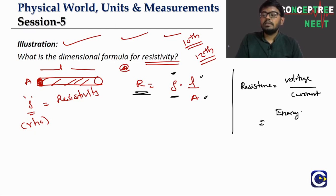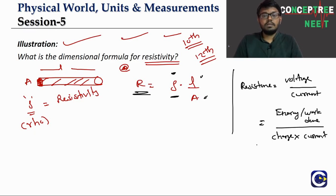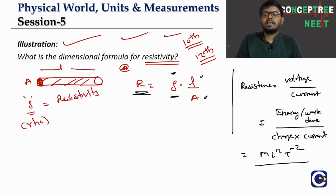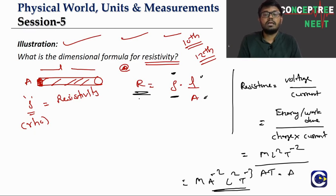Energy or work done has dimensional formula M L² T⁻². Charge is current × time = A × T. So voltage = M L² T⁻² / (A·T) = M L² T⁻³ A⁻¹. Therefore resistance = voltage / current = M L² T⁻³ A⁻¹ / A = M L² T⁻³ A⁻².